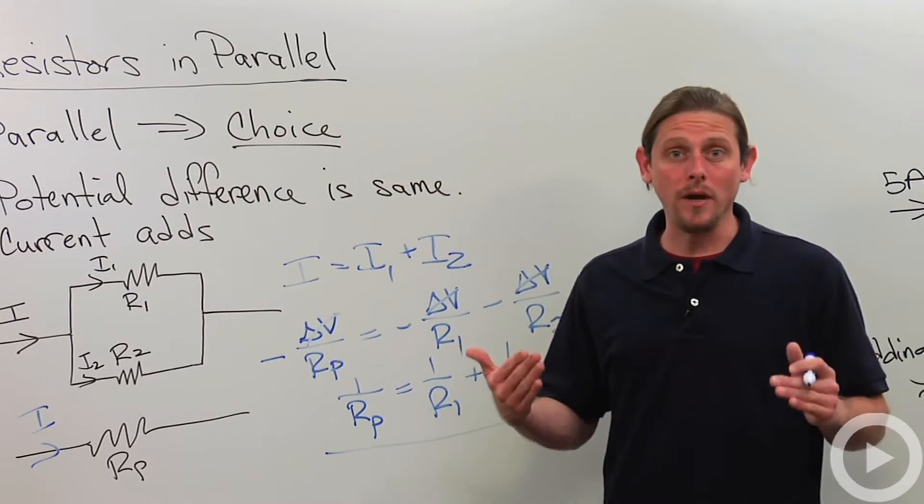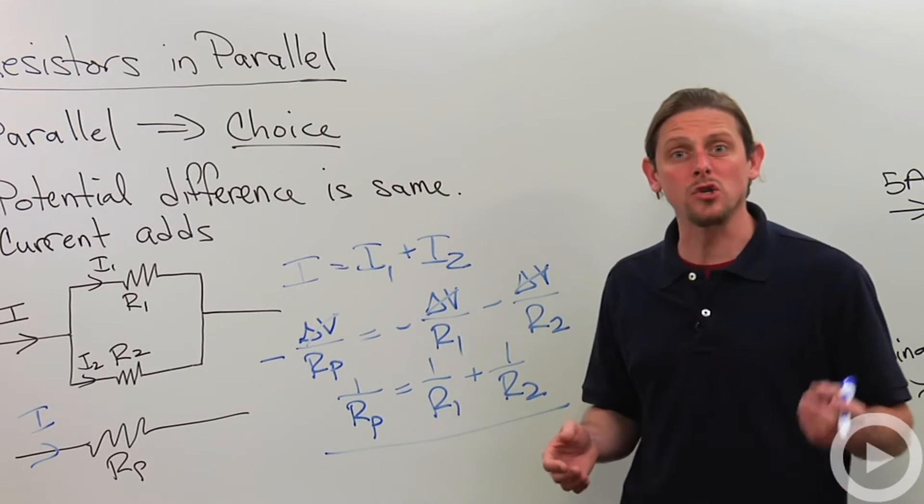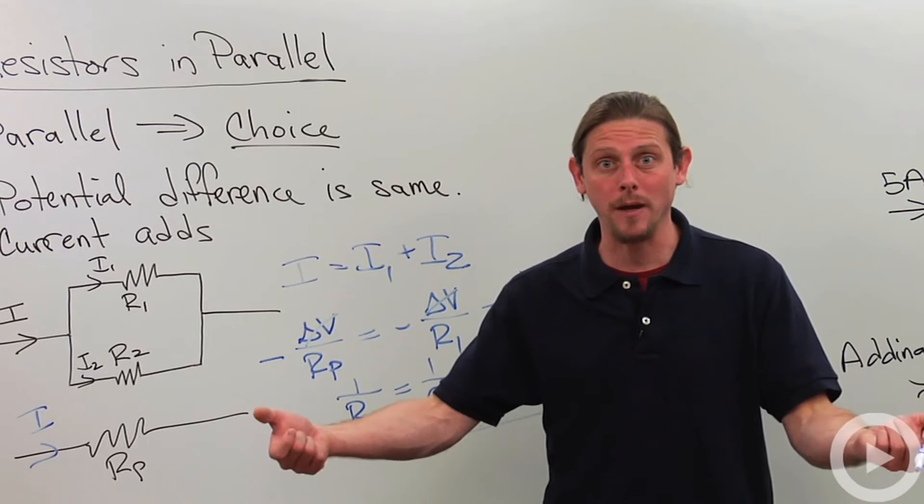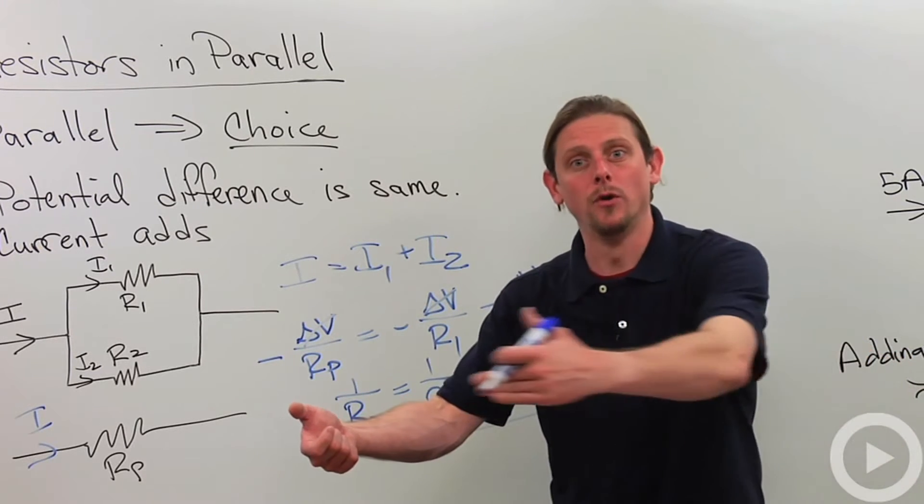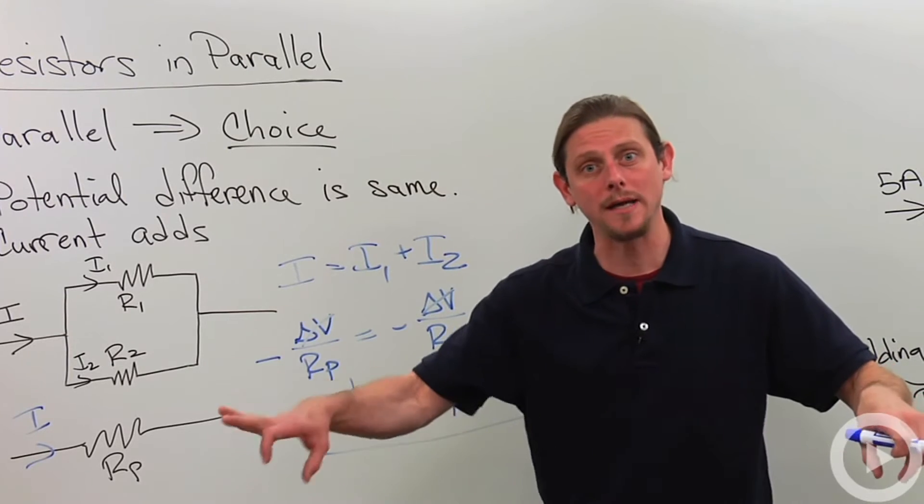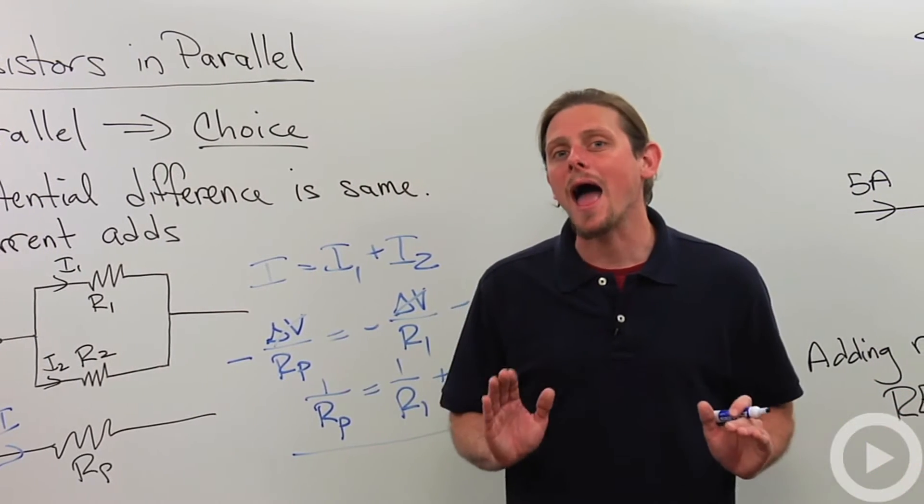Now one thing that we can think about parallel circuits as, it's kind of like you're trying to get from point A to point B. If there's only one road, then it's going to be annoying. Anybody who wants to go from point A to point B got to take that road.